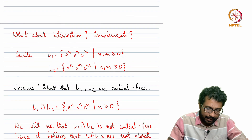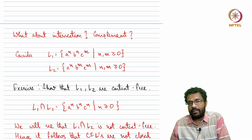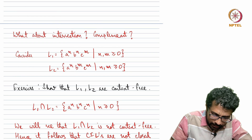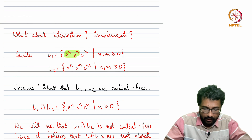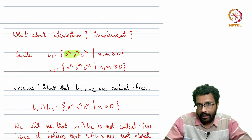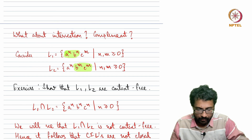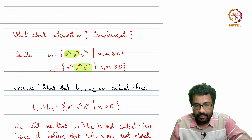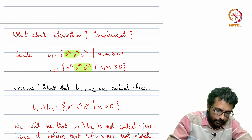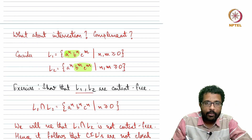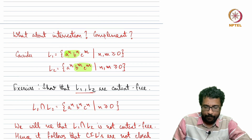Consider two languages: L1 is the set of strings of the form a^n b^n c^m where the number of a's and b's are the same, and L2 is the set of strings a^n b^m c^m where the number of b's and c's are the same. Both L1 and L2 are of the form a* b* c*. One exercise is to show that L1 and L2 are context-free, which is not that difficult. Let us see what happens when we take the intersection of these languages.